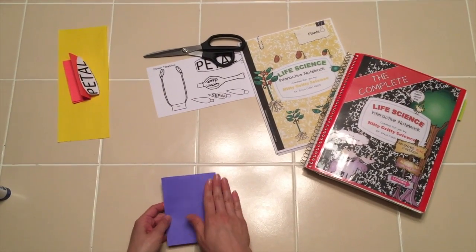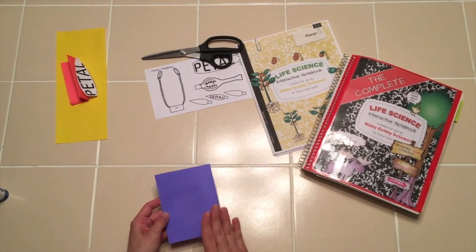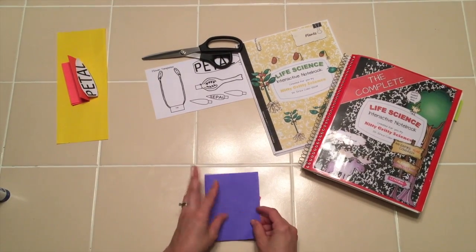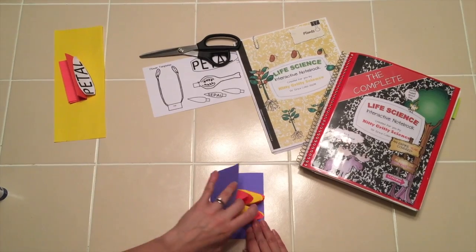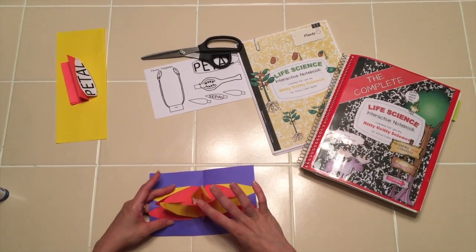So now what you want to do is take glue. You're going to glue just one side of the card down in the notebook, so that way now when the students open it, they have their beautiful flower structure.